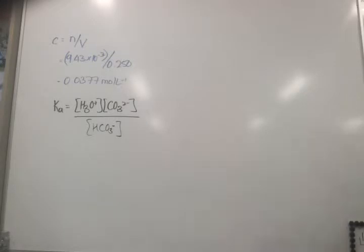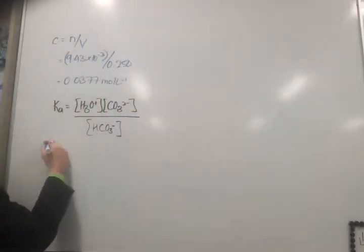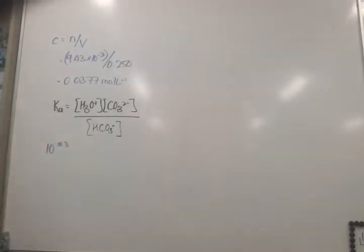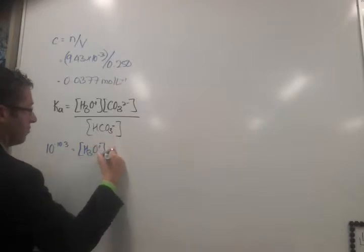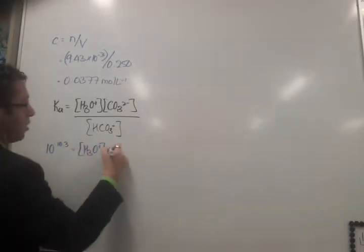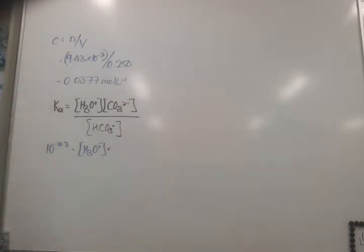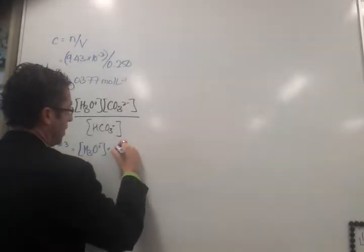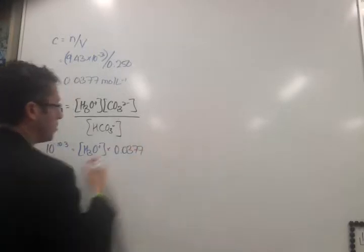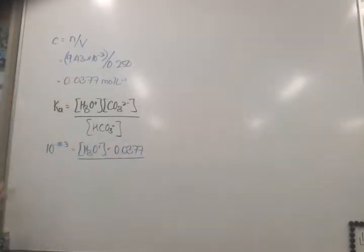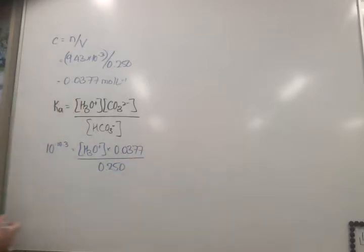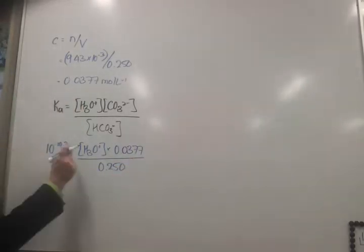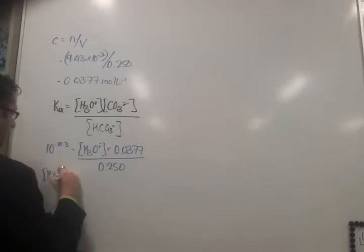The Ka for what we've had before is equal to H3O+ times carbonate over hydrogen carbonate. And I know a lot of these values. So, it's not wonderfully correct mathematically the way I'm going to do this, but bear with me. 10 to the power of negative 10.3. So, that was given because our pKa was 10.3. Equals, we don't know hydronium yet, so I'm going to leave that like that. Times, well I now know this carbonate because the 1 gram and the 250 mL is equal to 0.0377 moles per liter. Divided by, I was given this one in the question, 0.250.